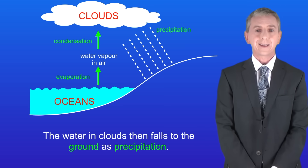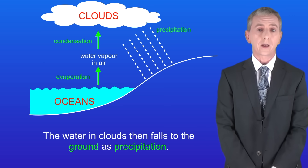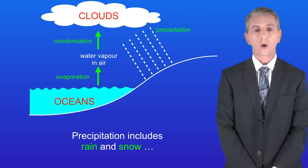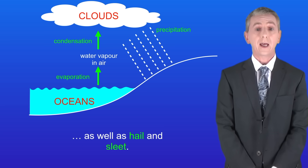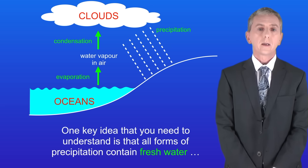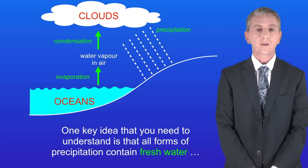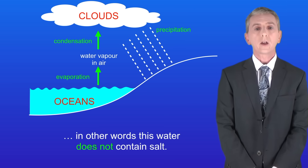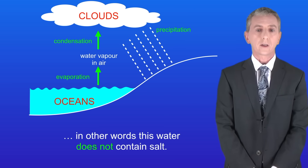The water in clouds then falls to the ground as precipitation. Precipitation includes rain and snow, as well as hail and sleet. One key idea that you need to understand is that all forms of precipitation contain fresh water — in other words, this water does not contain salt.